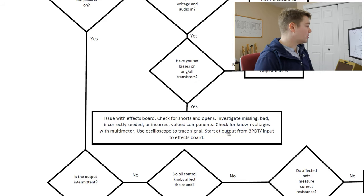If the measured pot resistance is correct, then you likely have an issue around where that potentiometer connects into the board. Look at the schematic and see what values on the FX board are around that affected potentiometer — you might see that you put in a wrong valued capacitor. For example, I had a wrong capacitor in the feedback loop and my gain dial stopped doing what it was supposed to. If you're getting the correct resistance but the pot isn't doing anything, then something in the circuit around that potentiometer is the issue. If the measured resistance is not correct, you'll need to replace those affected potentiometers.